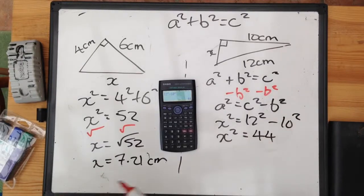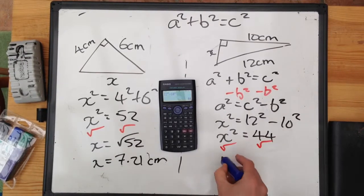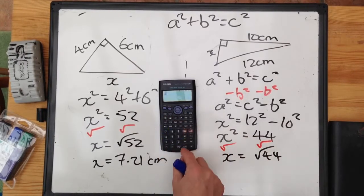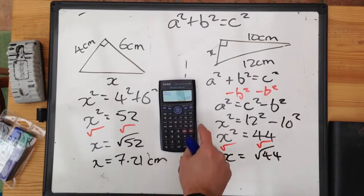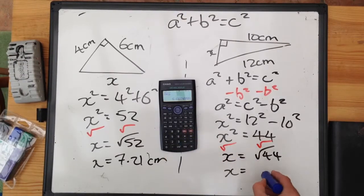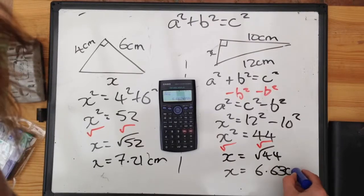Again, at that point, remove the squared with square root. And we end up with X is equal to the square root of 44. And that gives you 2 root 11 on one of these clever calculators. To a decimal to three decimal places, press the SD button and you get 6.63 centimetres.